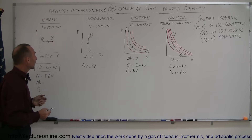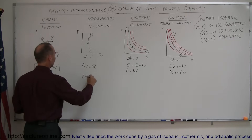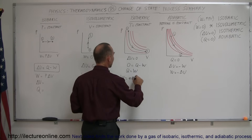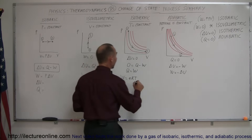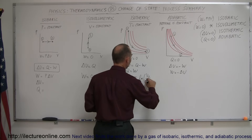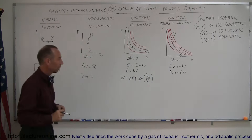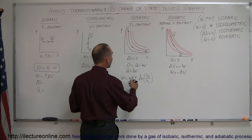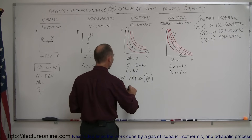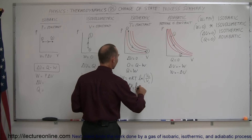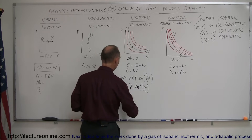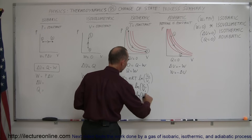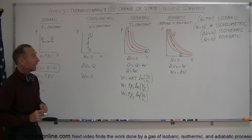How do we define the work done in each case? In the isovolumetric case, work is zero. In the isothermic case, work can be defined as W = nRT × ln(V2/V1), where T is constant. If temperature is not known, you can replace nRT with P1V1, so W = P1V1 × ln(V2/V1), or equivalently W = P2V2 × ln(V2/V1). There are several ways to calculate work done in an isothermic process.